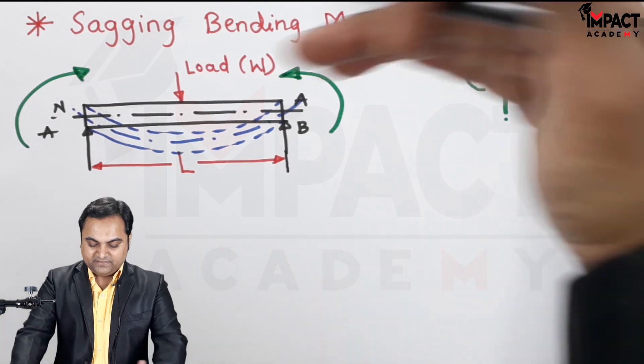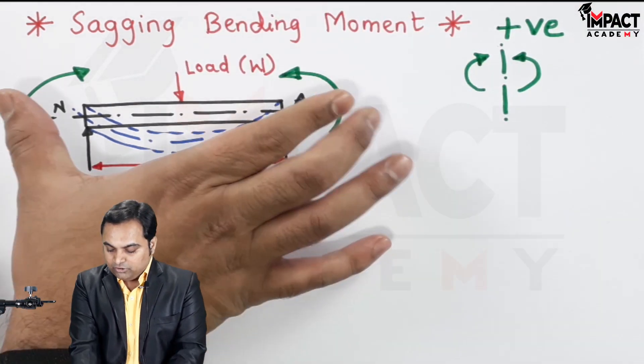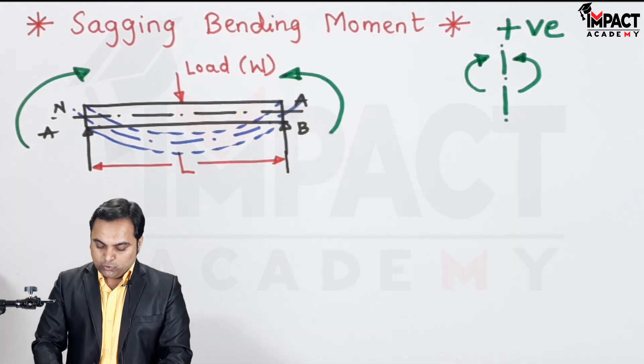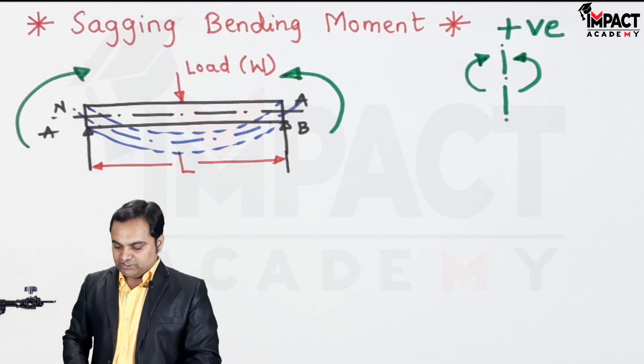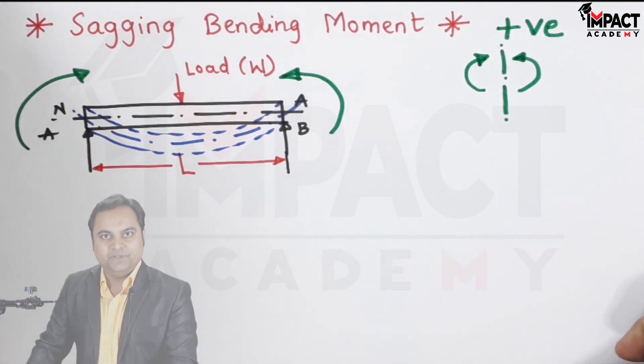And as we can see, when the beam is bending in this manner, in this fashion, the top layers are getting compressed whereas the bottom layers are in tension. So when I take the cross section, for example I am assuming a rectangular cross section of the beam.